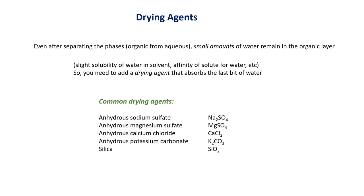We call it a drying agent because it absorbs water out of the organic layer, making the organic layer very dry. The common drying agents used in labs are anhydrous sodium sulfate, anhydrous magnesium sulfate, or anhydrous calcium chloride. We call them anhydrous because these salts have no water molecule — they are completely dry. You may have also seen silica dioxide packets in food or product packages; those silica packets work similarly to remove moisture from the environment.